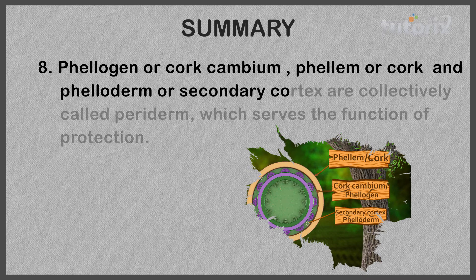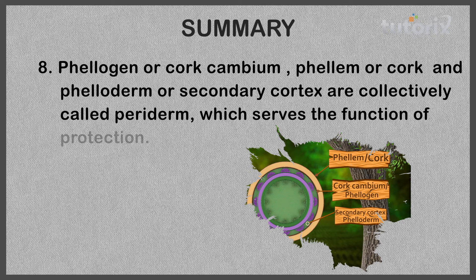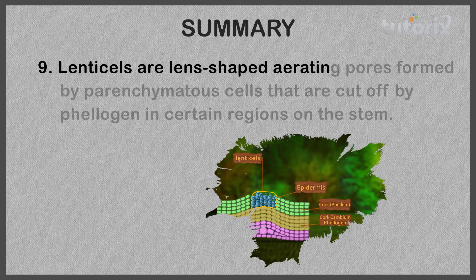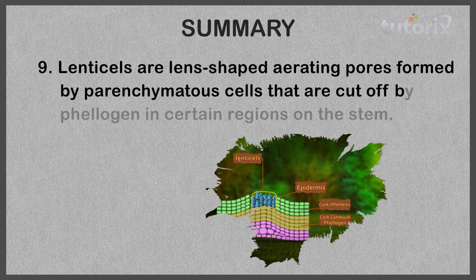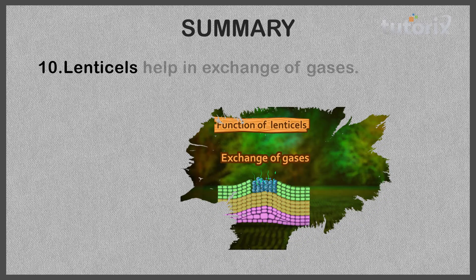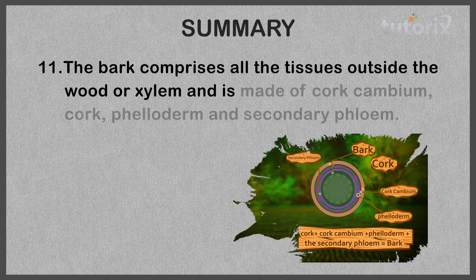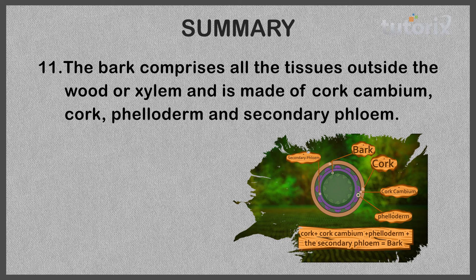Phelogen, phelim, and pheloderm are collectively called periderm, which serves the function of protection. Lenticels are lens-shaped aerating pores formed by parenchymatous cells cut off by phelogen in certain stem regions, helping in gas exchange. Bark comprises all tissues outside the wood or xylem and is made of cork cambium, cork, pheloderm, and secondary phloem.